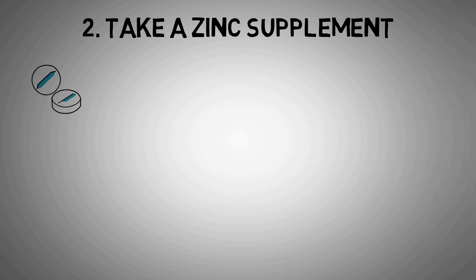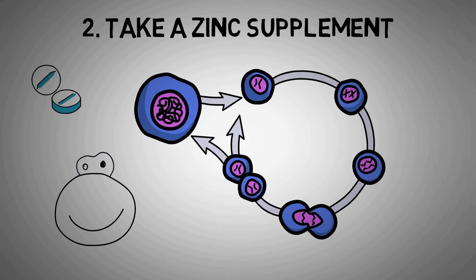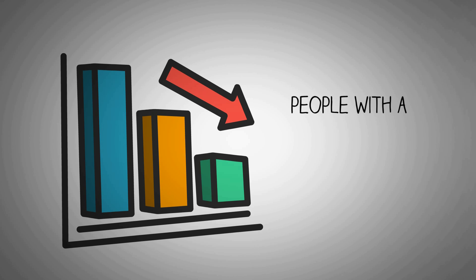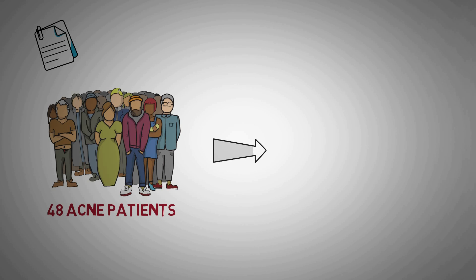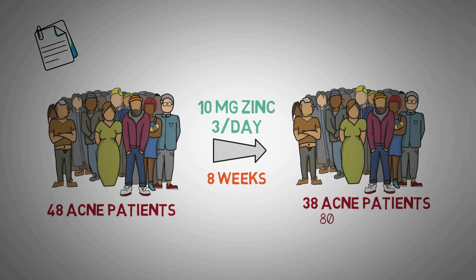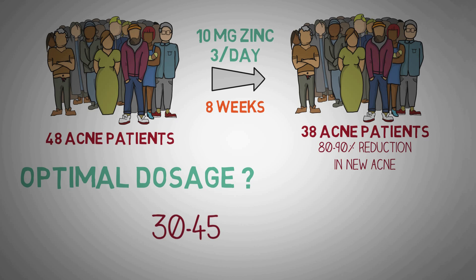Number two: take a zinc supplement. Zinc is an essential nutrient important for cell growth, hormone production, metabolism, and immune function — and it is one of the most studied natural treatments for acne. Research shows that people with acne tend to have lower levels of zinc in their blood than those with clear skin. Several studies have shown that taking zinc orally helps to reduce acne. In one study, 48 acne patients were given oral zinc supplements three times per day, and after eight weeks, 38 patients experienced an 80 to 100% reduction in acne. Several studies have shown a significant reduction in acne using 30 to 45 milligrams of elemental zinc per day.